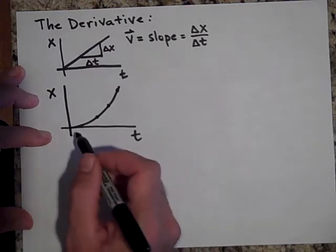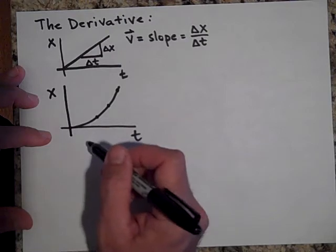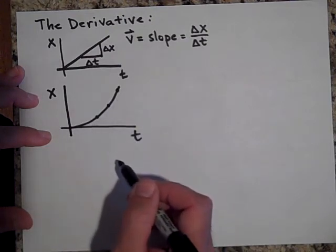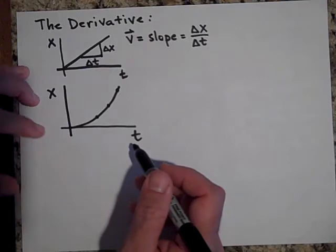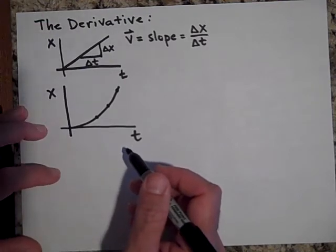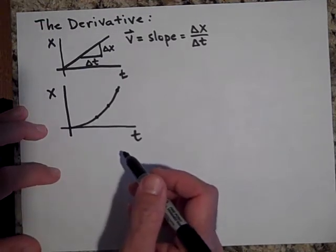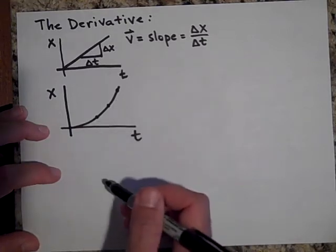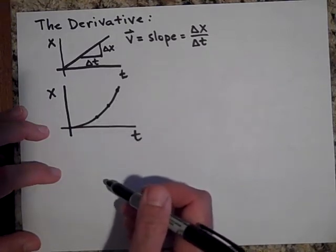So it turns out that our slope is varying as time goes on. And it turns out that the derivative can tell us how it varies, how the slope varies. In fact, the derivative is the slope of this graph.